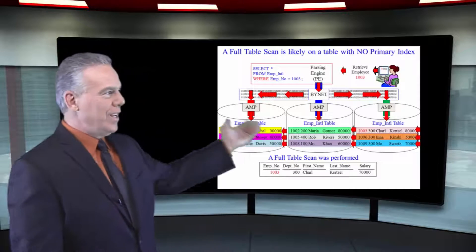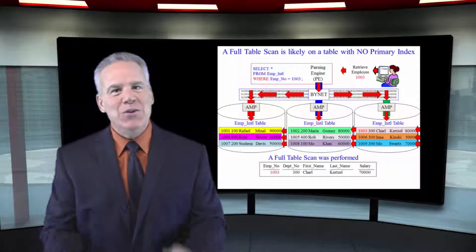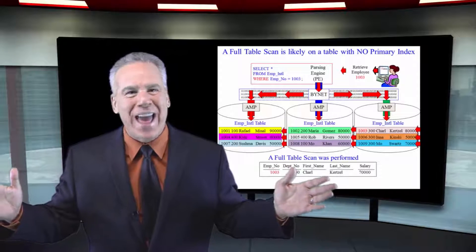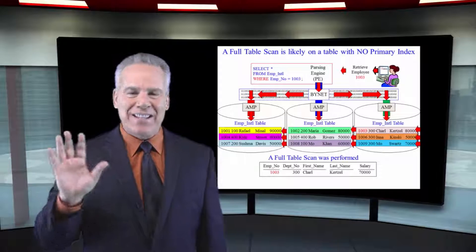Here's our no primary index table, but when we query it, it's going to do a full table scan, because we don't have a primary index. That's the penalty you pay.